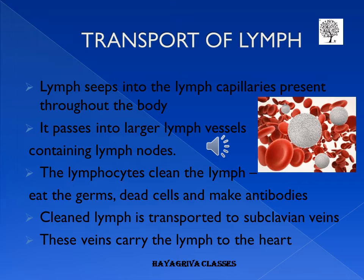How does the transport of lymph occur in the body? Lymph seeps into the lymph capillaries present throughout the body, then passes into larger lymph vessels containing lymph nodes. In the lymph nodes, lymph gets cleaned by white blood cells called lymphocytes, which eat germs and dead cells and also make antibodies to protect the body from disease. The cleaned lymph, containing large protein molecules, digested fat, and other useful materials, is then transported by lymph vessels to the large veins called subclavian veins, which run just beneath the collar bone. These veins carry the lymph to the heart.